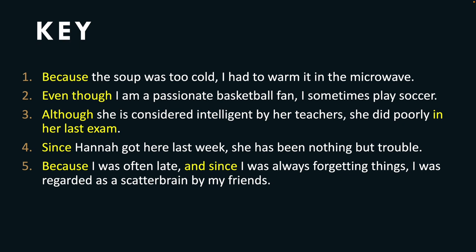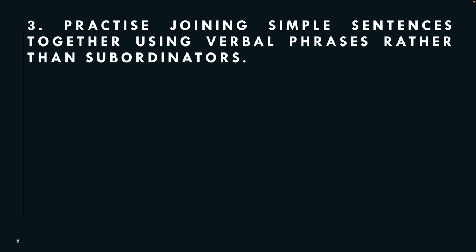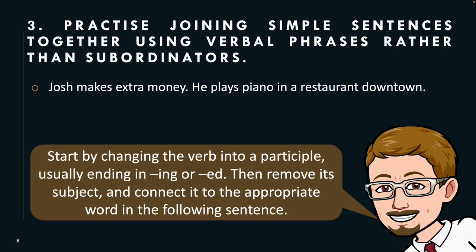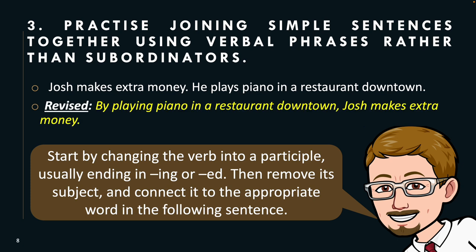So there you have it. Now let's take a look at the third suggestion: practice joining simple sentences together using verbal phrases rather than subordinators. Start by changing the verb into a participle, usually ending in -ing or -ed. Then remove its subject and connect it to the appropriate word in the following sentence. For example: 'John makes extra money. He plays piano in a restaurant downtown.' Revised, using the preposition 'by' and a participle: 'By playing piano in a restaurant downtown, John makes extra money.'